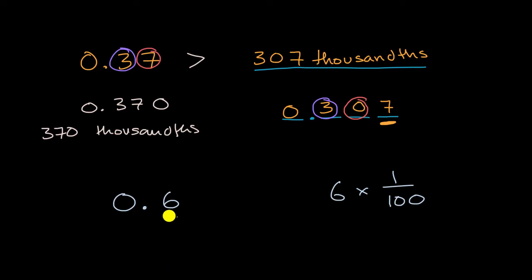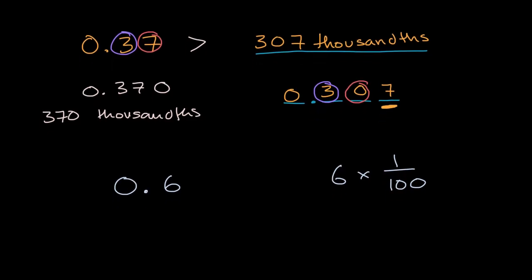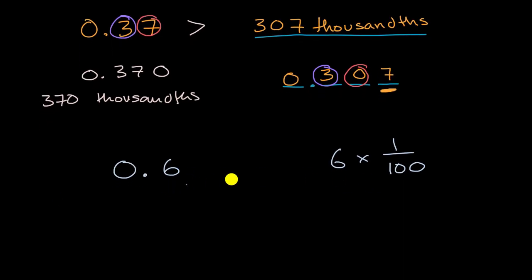All right, so once again, in order to tackle this, you really just have to think about what are different ways to represent them and really just try to get to a common representation. And so I could rewrite six tenths as six times one tenth. And this might be enough to be able to compare the two because six times one tenth, is that going to be greater than or less than or equal to six times a hundredth?